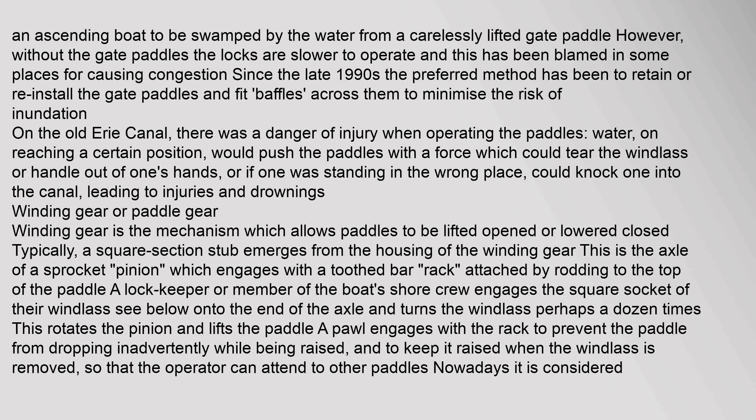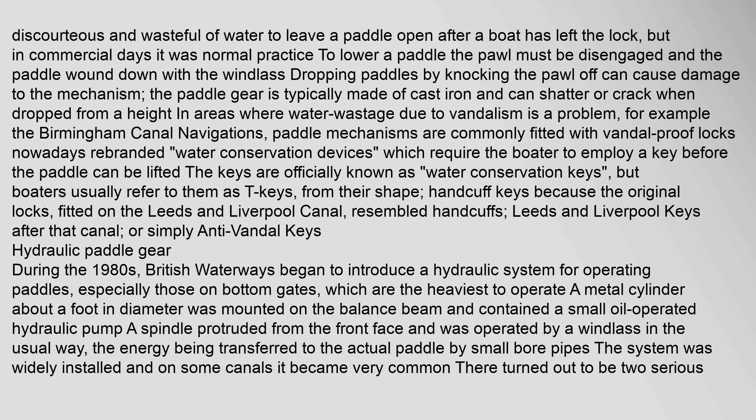Winding gear is the mechanism which allows paddles to be lifted (opened) or lowered (closed). Typically, a square section stub emerges from the housing of the winding gear — this is the axle of a sprocket pinion which engages with a toothed rack attached to the top of the paddle. A lock keeper engages the square socket of their windlass onto the end of the axle and turns it perhaps a dozen times, rotating the pinion and lifting the paddle. A pawl engages with the rack to prevent the paddle from dropping inadvertently while being raised and to keep it raised when the windlass is removed.